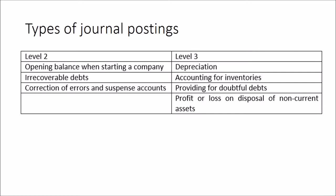At Level 3, there are additional ones: depreciation, accounting for inventories (which is stock), provisioning for doubtful debts, and profit or loss on disposal of fixed assets such as cars, vans, and so on. We don't need to worry about those for now, though they are more interesting when we get to Level 3.